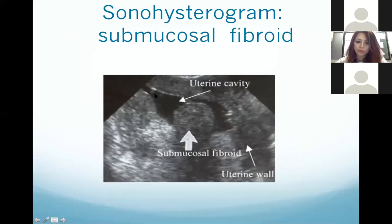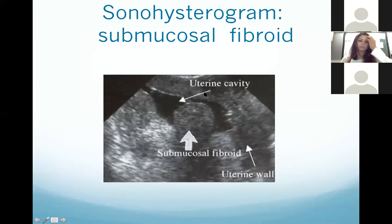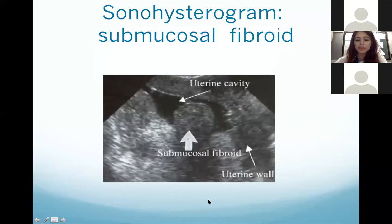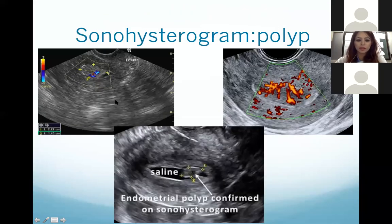This is a sonohysterogram showing fluid within the endometrium and a submucosal fibroid projecting into the endometrium. These other images of the sonohysterogram also show a submucosal fibroid projecting into the endometrial canal, and here you can also see the vascularity.